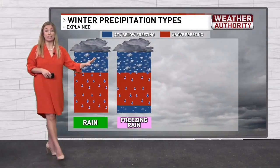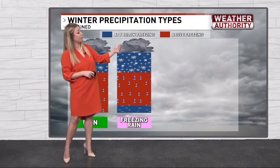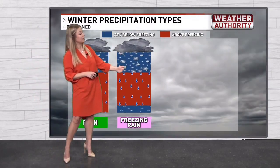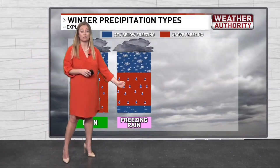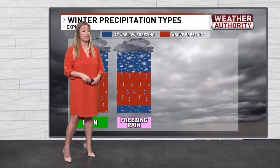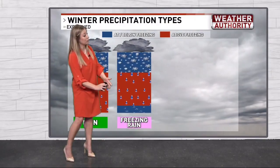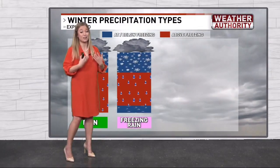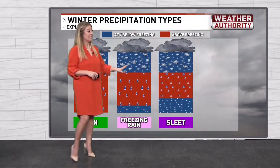Now let's talk about freezing rain. It's a similar process. You have snow falling from the cloud base in a freezing layer. It melts into rain in a warmer layer just below that, but the surface is freezing so that rain freezes on contact. That's when you get situations like black ice.